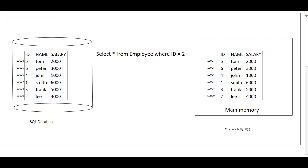The employee table has an ID, name, and salary. I've added entries like Tom, Peter, John, Smith, etc. When we store information into the database, it goes into the disk. Inside the disk there are blocks, and inside each block the data is stored. One block can contain a full row — ID, name, salary — or multiple rows. Each block has an address. For simplicity, I've assumed each row occupies one block, so each row has a separate address.